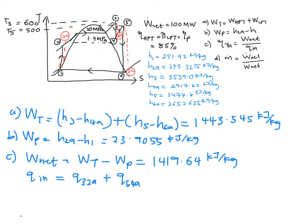So, this is equal to H3 minus your H2A plus your H5 minus your H4A. And finally, the value for Q in is equal to